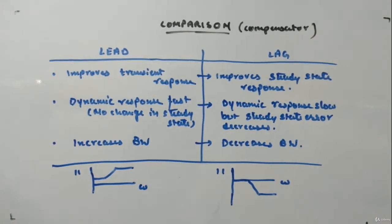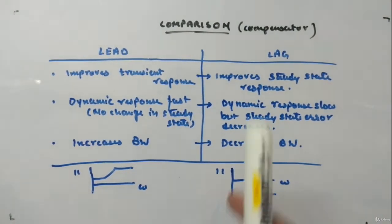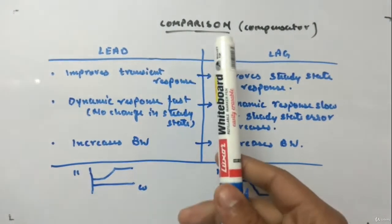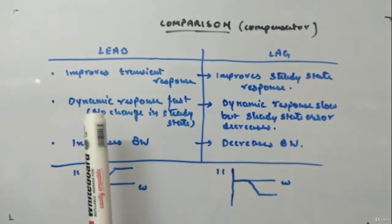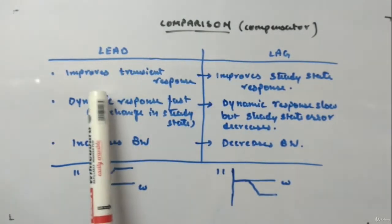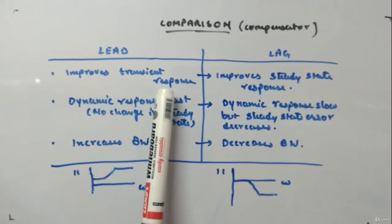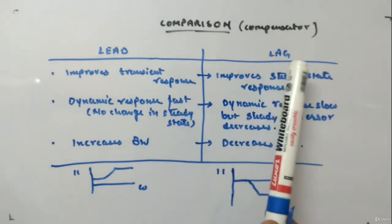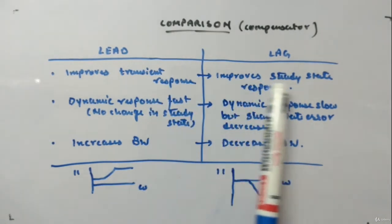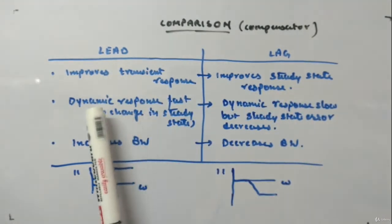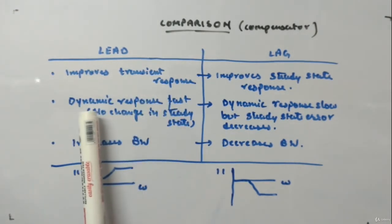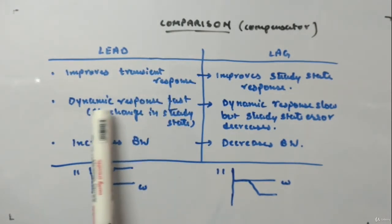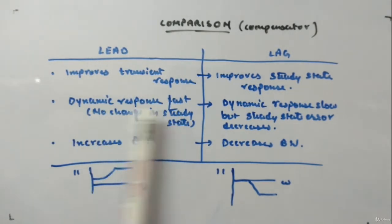Just a small comparison between lead compensator and lag compensator. A lead compensator improves the transient response, making the dynamic response faster.